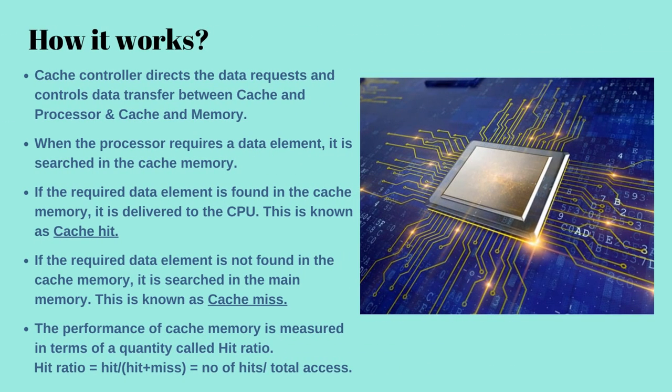Hello, Ashna this side, and I will be explaining how cache memory actually works. The cache controller handles data requests and manages data flow between the cache and the processor as well as the cache and main memory. To get the most out of its performance, the CPU must access ultra fast memory. When the CPU needs to access data, it first looks into the cache memory. If the data is found in cache memory, it is referred to as a cache hit, and if data is not found, it is called a cache miss.